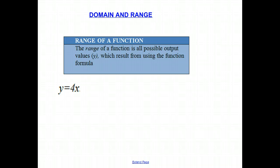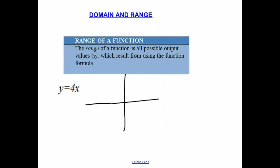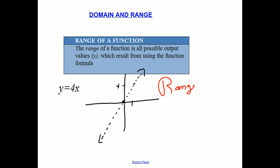Now let's talk about the range of a function. The range is all possible output values — the y value — which result from using the function formula. For example, y equals 4x is a linear function. When x is 0, y is 0; when x is 1, y is 4. This gives us a straight line going forever in both the negative and positive y directions. There is no value for y which would not be valid, so the range of this function is all real numbers.